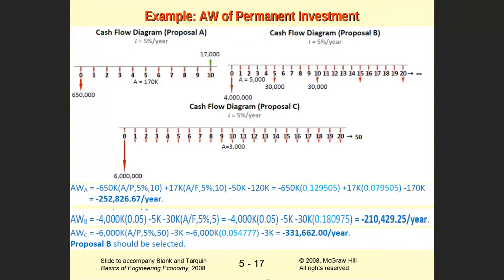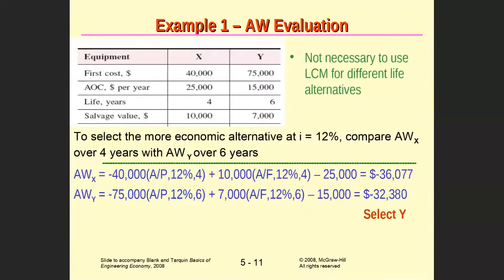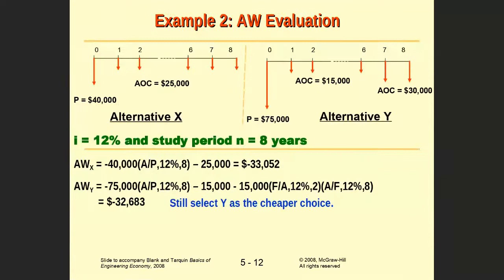That covers this example on permanent investment. I chose this example because it has three different scenarios covering different project lifespans and includes the capitalized cost case. We have previously seen comparing alternatives and calculating capital recovery — those are all the types of questions that could come for Chapter 6. It is easier, simpler, and shorter compared to Chapter 5. However, you need to understand the meaning of capital recovery, which was clarified in the last lecture.